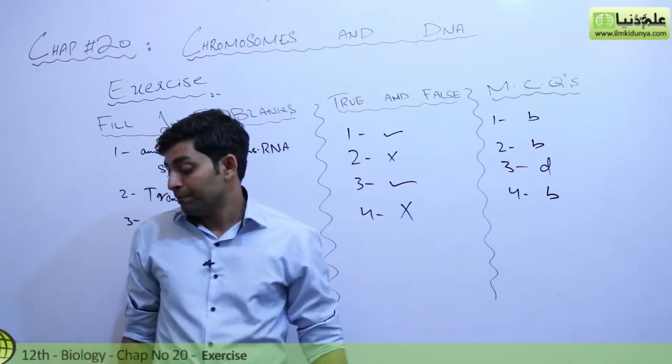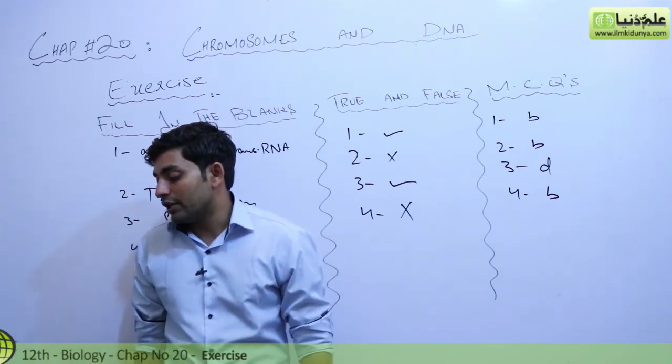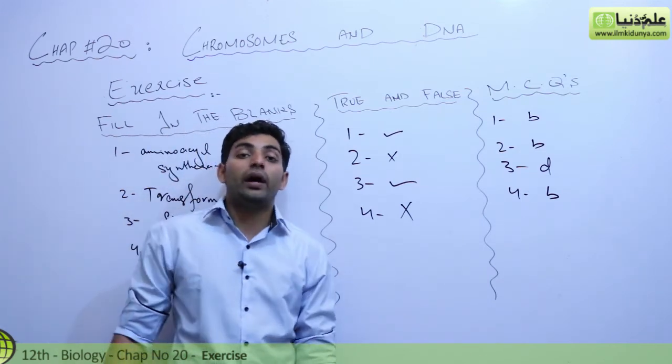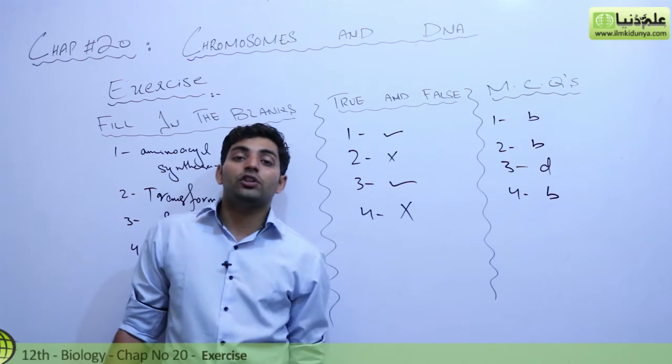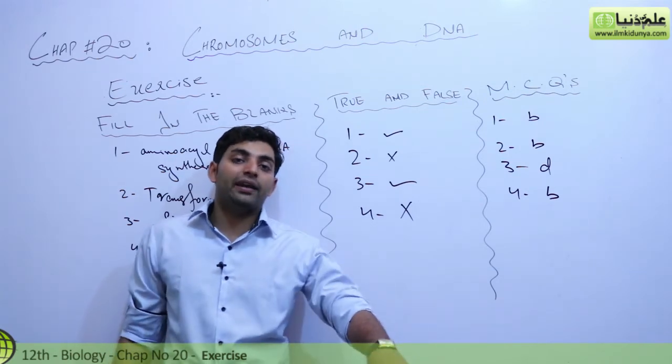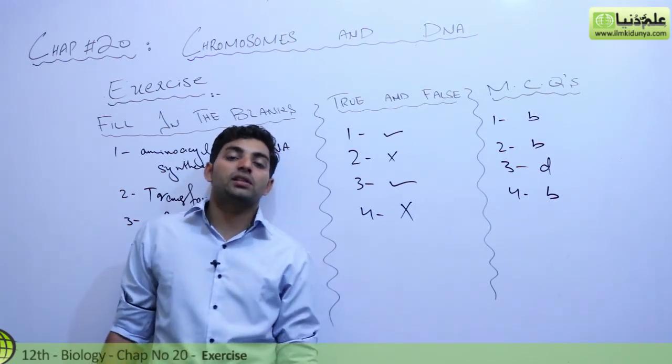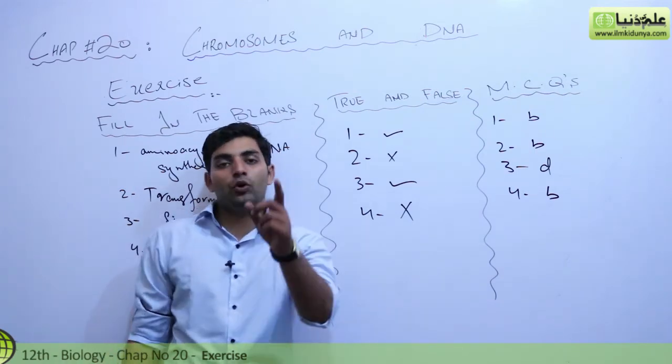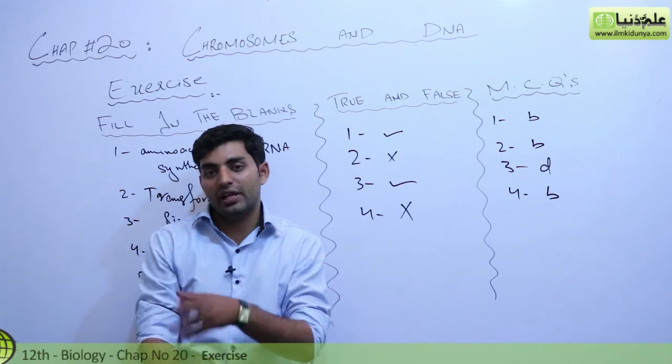How did Meselson and Stahl show that DNA replication is semi-conservative? They performed an experiment with nitrogen isotopes that proved how in the first generation and the second generation you have the DNA experimentations, interpretation, and results.